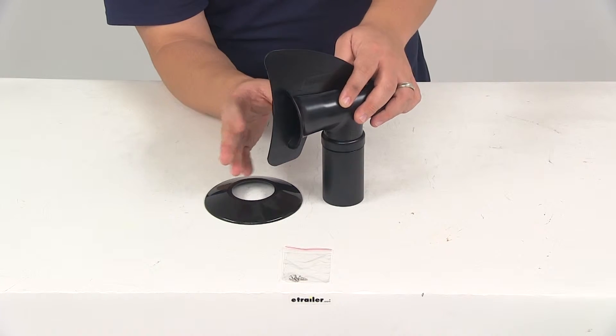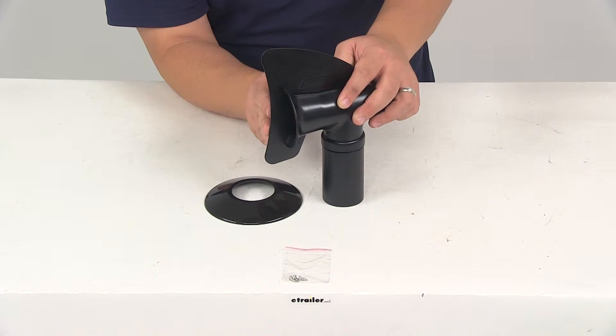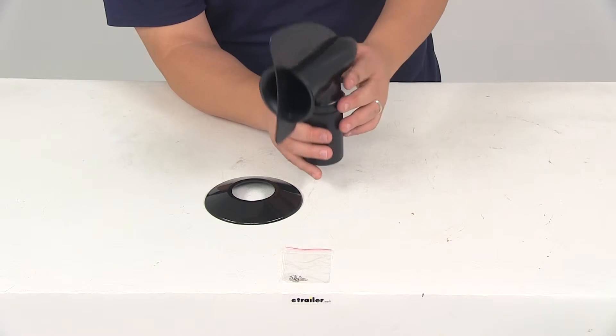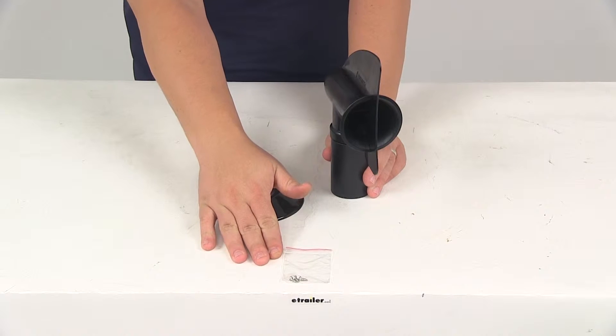It will attach to any RV with an inch and a half outer diameter pipe. Very easy installation. It's going to come with the installation hardware.